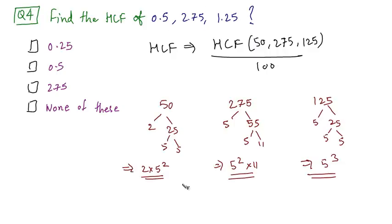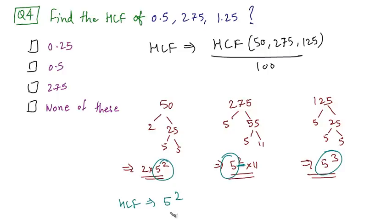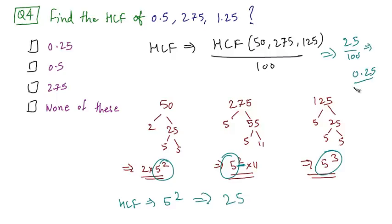I have already calculated the prime factors of each number. HCF is equal to the product of common prime factors with the lowest power. The common prime factor here is 5 and the lowest power is 2, so the answer is 5 raised to 2. The HCF of 50, 275, and 125 comes out to be 25. But our final answer is this HCF divided by 100, that is 25 divided by 100, which comes out as 0.25. So the correct option is option A.